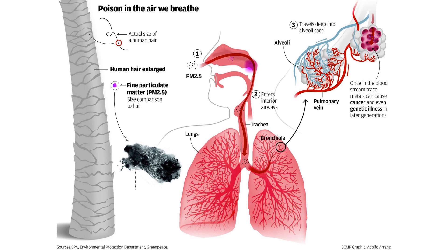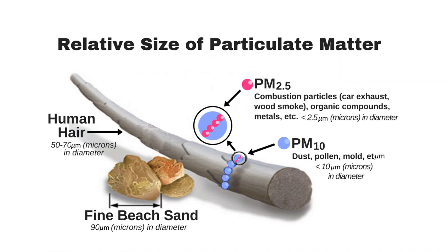Researchers have found that the size of the particle plays a large role in how dangerous they are. Our respiratory tracts are designed to remove particulate, and the large particles are filtered in the nose and throat via cilia and mucus. But smaller particles, less than around 10 microns, can settle in the bronchi and lungs. It can be hard to visualize how small these particles are — 10 microns is about one-seventh of the diameter of a human hair. Particles in this size range include mineral dust, pollen, and mold.